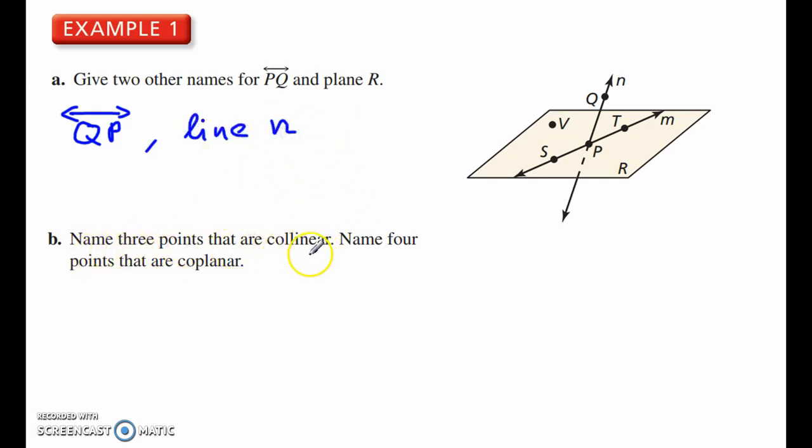Name three points that are collinear, that means they're on the same line. On this line N, there are only two points given. So let's look at line M, we've got S, P, and T. So three points that are collinear are S, P, and T.